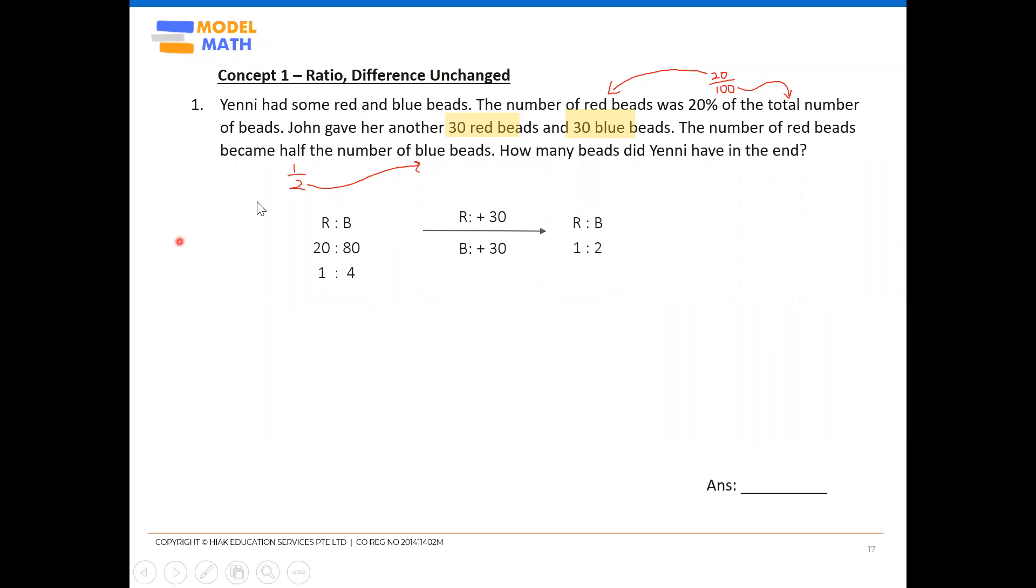So we have first step recorded our data. Next step is to identify your common base. When I say common base, it means what should remain the same throughout this whole thing—what remains unchanged. So normally our common base, we have four things to consider: the red unchanged, the blue unchanged, the total unchanged, or the difference unchanged. Let's figure out one by one to see what should remain the same.